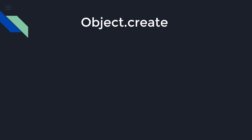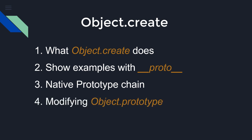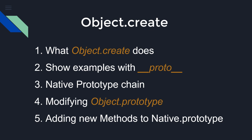Hello everyone, my name is Zura and today I want to talk about JavaScript prototype — how you can extend an object using prototype. First I want to explain what the Object.create method does. Then I'm going to show you examples using the __proto__ property, how native prototype chain is constructed, and how we can modify object prototype and add new methods to native prototype objects like String prototype, Number, or Date prototype. I guarantee the video will be interesting and if you don't have an idea how prototype works, you will definitely understand at the end.